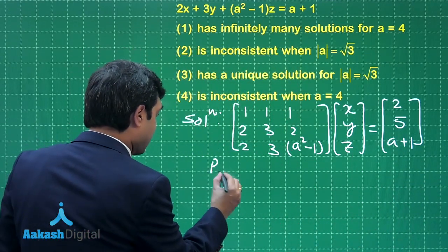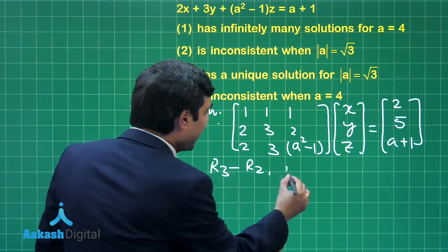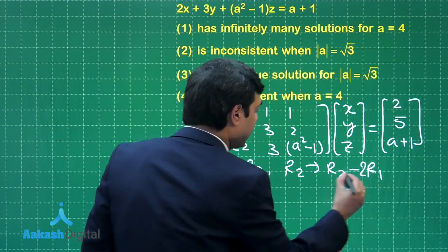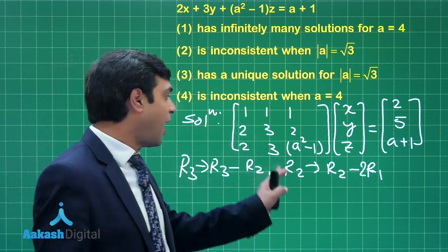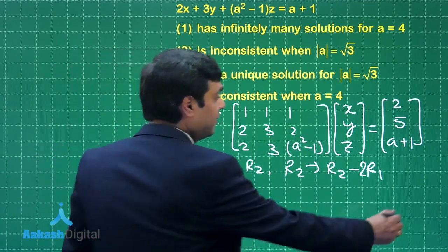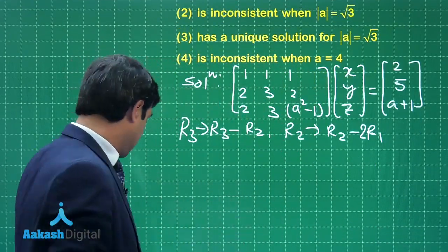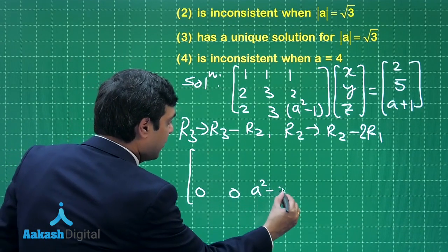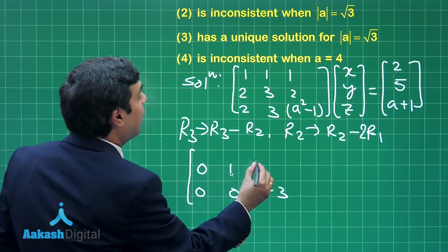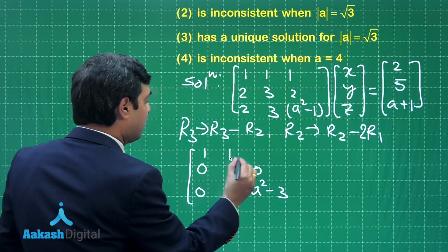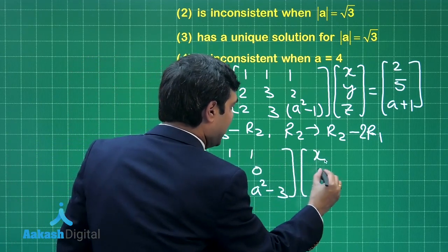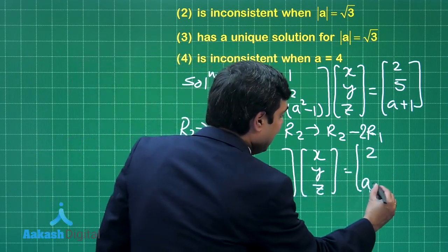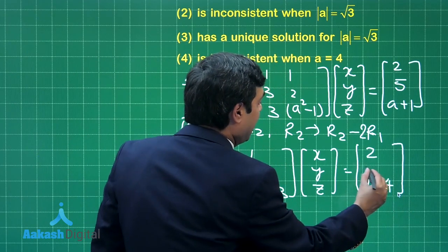If I apply first R₃ minus R₂ in one step, and after that I apply R₂ replaced with R₂ minus 2R₁. First I applied R₃ replaced with R₃ minus R₂, then R₂ with R₂ minus 2R₁. My objective was to make zeros. We have the result as [1 1 1; 0 1 0; 0 0 a²-3] [x; y; z] = [2; 1; a-4].